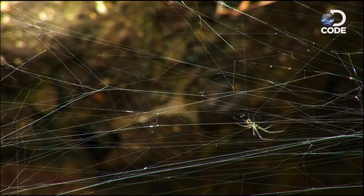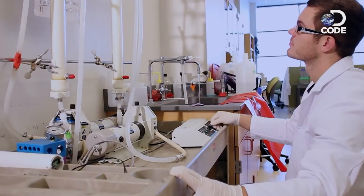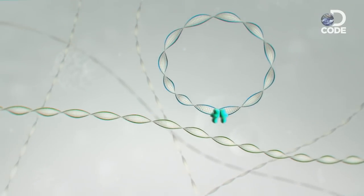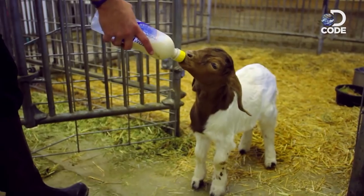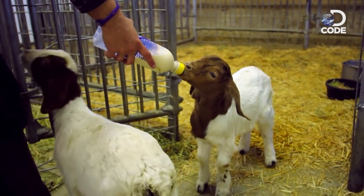We grow large amounts of spider silk gene. We cut the gene, we splice it into the goat DNA and we splice it together. Then we take that and transplant that embryo into a goat. The goat ends up with a baby goat that now has the spider silk DNA in it.